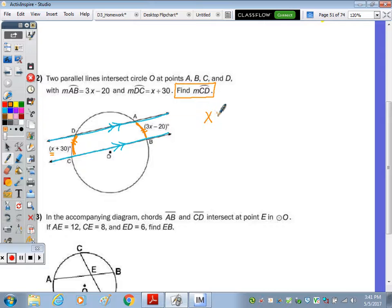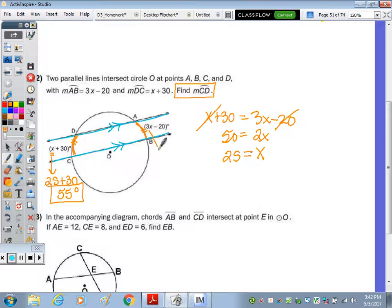I'm going to set X plus 30 equal to 3X minus 20 and solve for X. So subtracting the X from 3X, we get 2X. Adding the 20 over to 30, we get 50. Divide by 2, and X is 25. Now I go back over to arc CD and substitute 25 in for X. 25 plus 30 is 55 degrees. Just to check, we should get 55 here as well. So 3 times 25, if you have 3 quarters, you have 75 cents. 75 minus 20 is 55, so it does work out. They are the same measure.